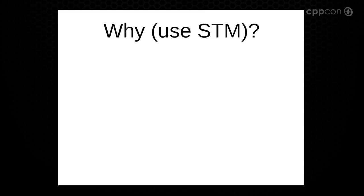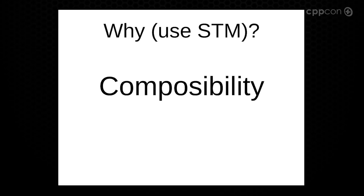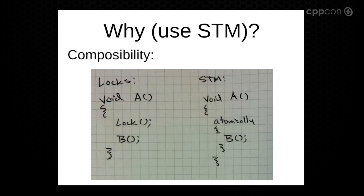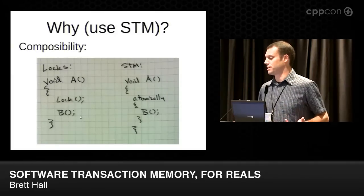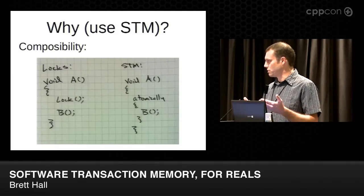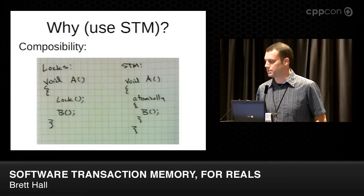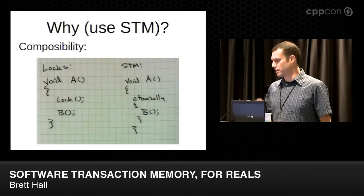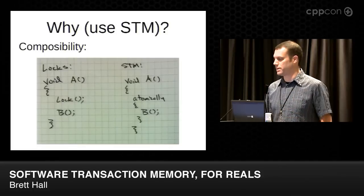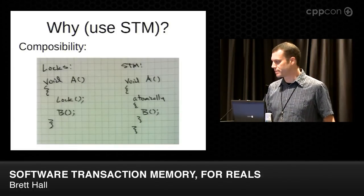So why would you use software transactional memory? For composability. When you're programming with locks, we've got function A, we call it, we take a lock and we call function B. This is really dangerous to do unless you know what B does and what everything B calls does — because if they take a lock, you've got locks, you don't know the ordering, and you've got potential deadlock. Makes programming with locks in the large really painful. For small sections of code it works fine, but when you're talking about the whole program, it's a real pain.